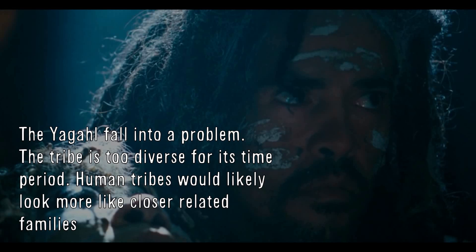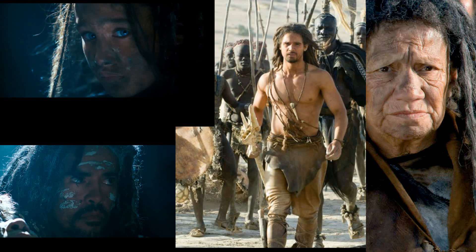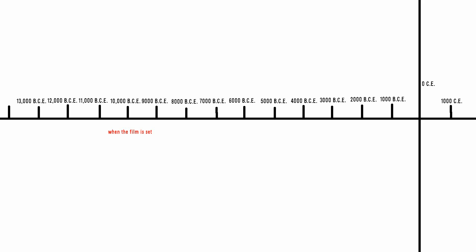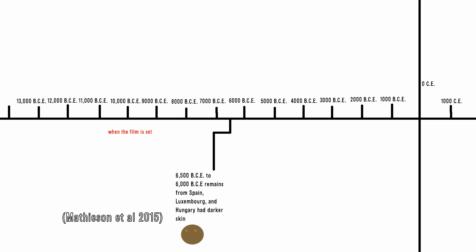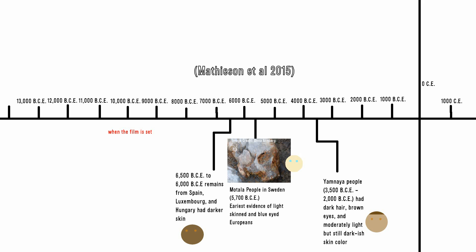None of the tribe members looked too close in resemblance to one another, as a result of the cast being of many different ethnic backgrounds. Most tribes would be much more homogeneous and much more closely related, like a family unit. The people who lived in Eastern Europe at this time did not look exactly like this. Light skin in humans was a relatively recent phenomenon - traveling back 12,000 years, many if not all European humans still possessed the dark skin of their African ancestors. 8,000-year-old remains from Hungary showed that humans living there were dark skinned, and similarly so in Italy and Luxembourg.